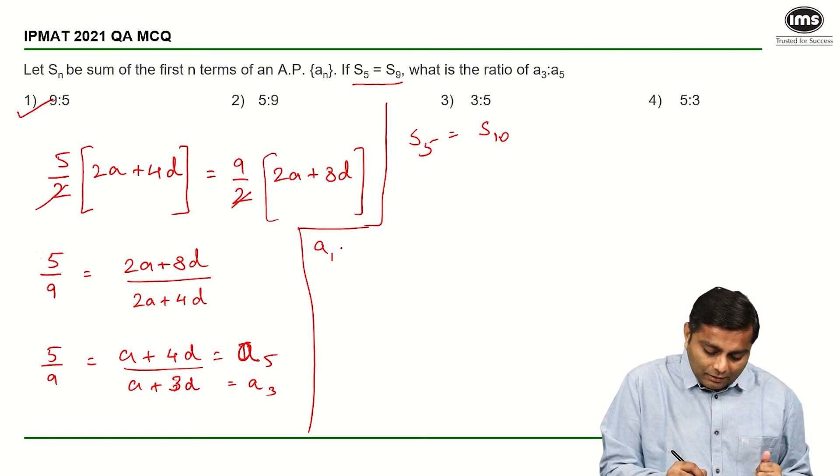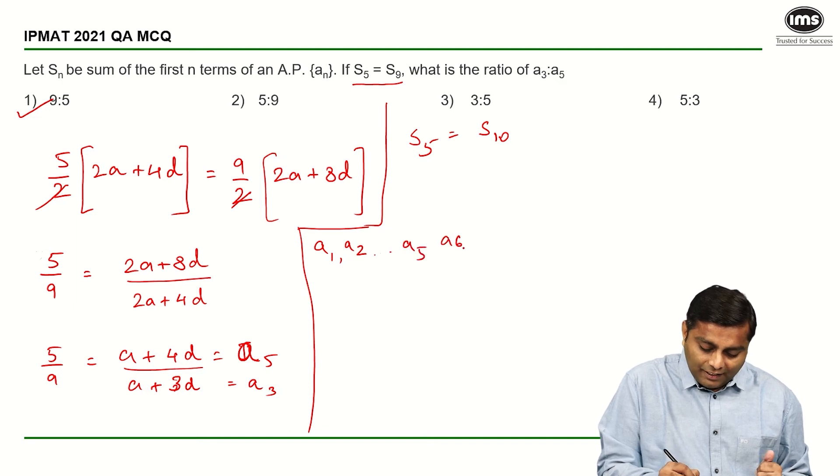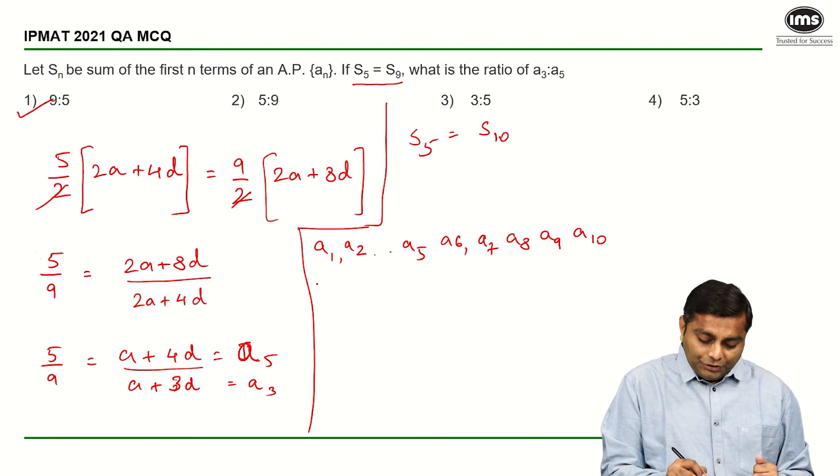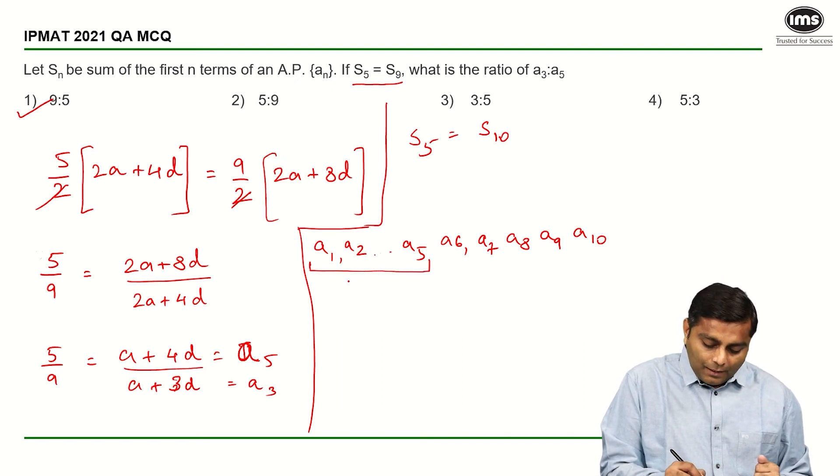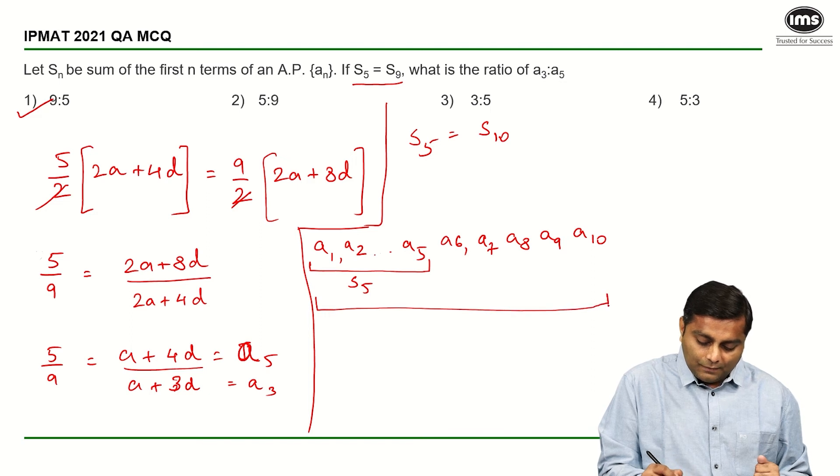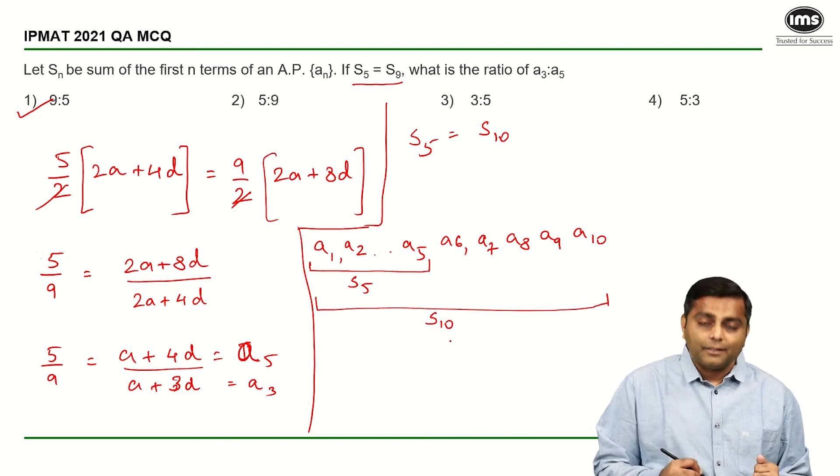What do we really need to do or rather how do you think of this question? So let us say A₁, A₂ and dot dot dot A₅, then you have A₆, A₇, A₈, A₉ and A₁₀. Clear? Now this summation is S₅ and this summation is S₁₀.